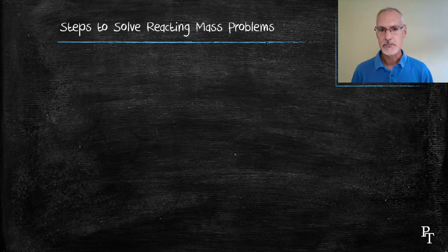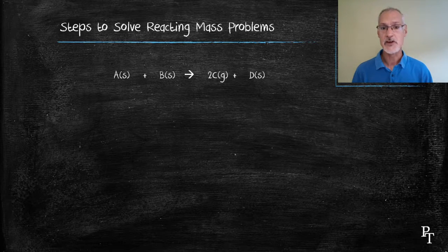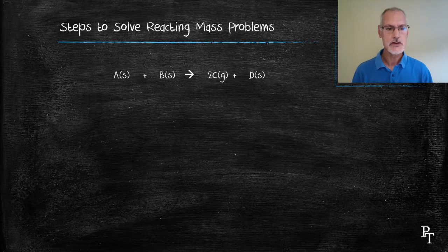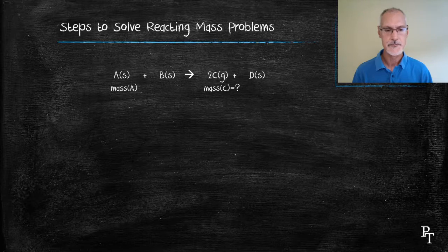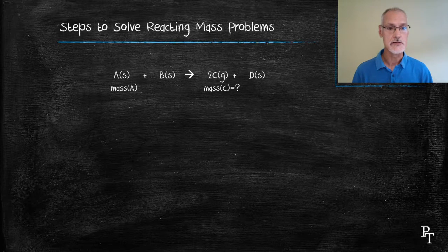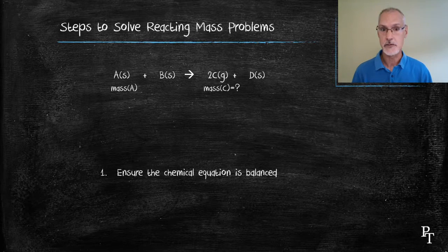The steps to solving mass problems. We need to begin with a chemical equation, and we're usually told something about one of the substances in that equation, and asked to relate that to the mass of another substance in the equation. The first step that I need to do is ensure that the equation is balanced before I begin.